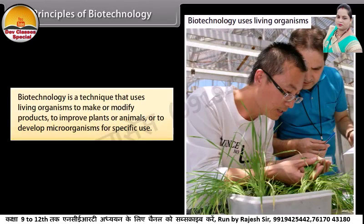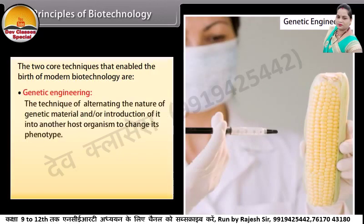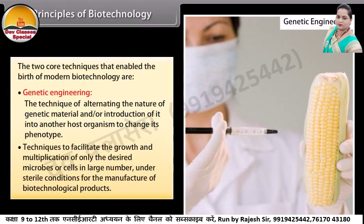Principles of biotechnology. Biotechnology is a technique that uses living organisms to make or modify products, to improve plants or animals, or to develop microorganisms for specific use. The two core techniques that enable the birth of modern biotechnology are genetic engineering — the technique of altering the nature of genetic material and/or introduction of it into another host organism to change its phenotype — and techniques to facilitate the growth and multiplication of only the desired microbes or cells in large numbers under sterile conditions for the manufacture of biotechnological products.